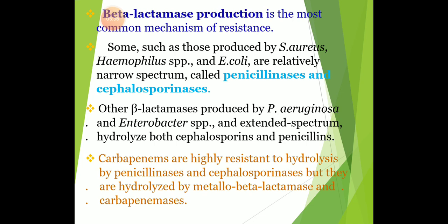Beta-lactamase production is the most common mechanism of resistance. Some, such as those produced by Staph aureus, Haemophilus, and E. coli, are relatively narrow spectrum, called penicillinase and cephalosporinase. Other beta-lactamases produced by Pseudomonas aeruginosa and Enterobacter are extended spectrum and hydrolyze both cephalosporins and penicillins. Carbapenems are highly resistant to hydrolysis by penicillinase and cephalosporinase, but they are hydrolyzed by metallobeta-lactamases and carbapenemases.